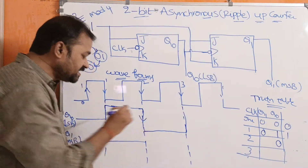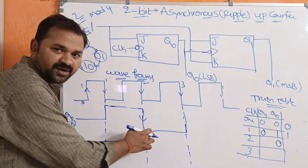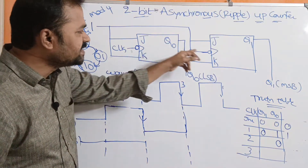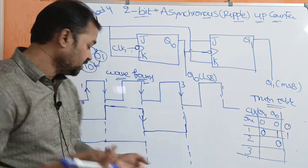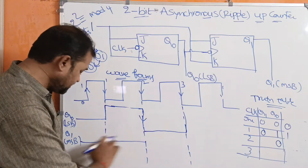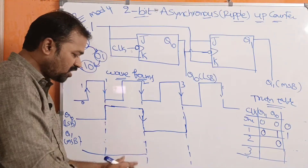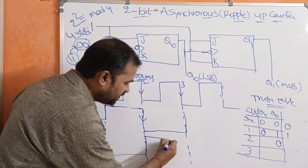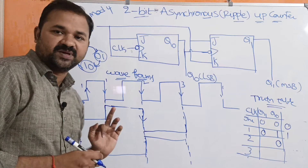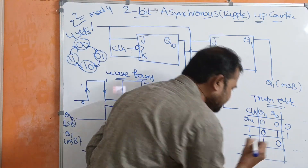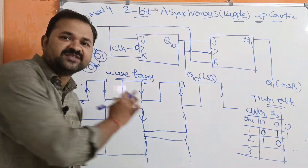The falling edge of Q0 triggers Q1. Previously Q1 was 0, so now Q1 is toggled to 1. Q1 will remain 1 until the next falling edge of Q0. So after the second clock pulse, Q1=1, Q0=0, which is decimal 2.